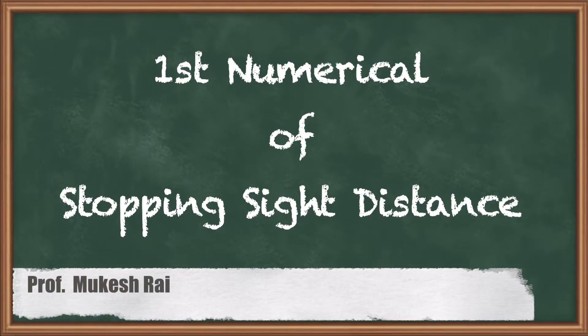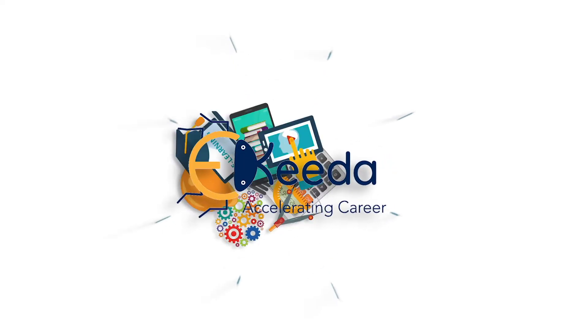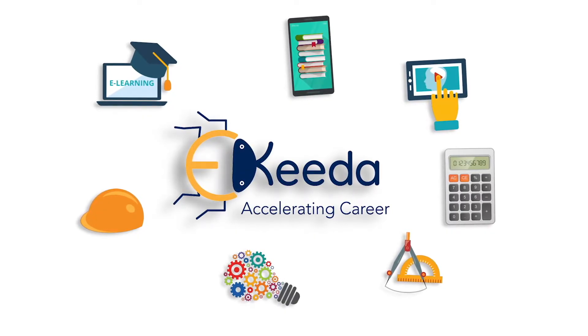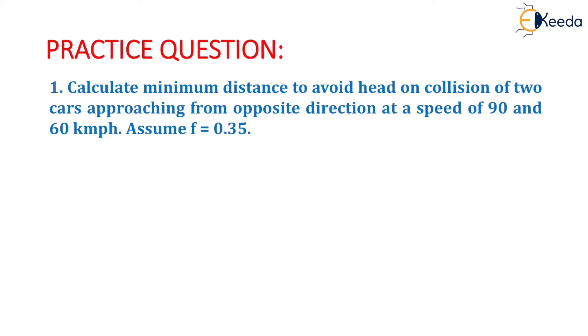Hello students, today we are going to solve the first numerical on stopping sight distance. The question is: calculate minimum distance to avoid head-on collision of two cars approaching from opposite directions at a speed of 90 kmph and 60 kmph. Assume coefficient of friction equals 0.35.